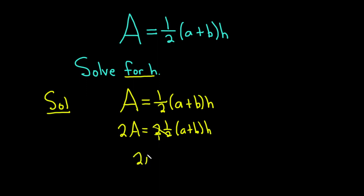So we're left with 2A equals (a + b) times h. And we're looking for h. So you don't want to multiply or anything here, right? You're looking for h.